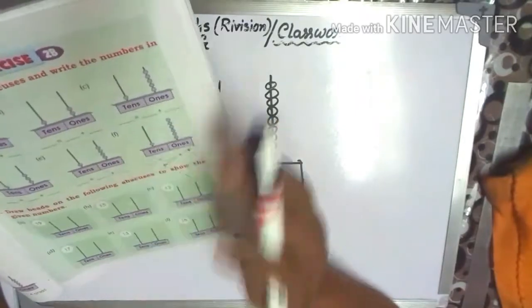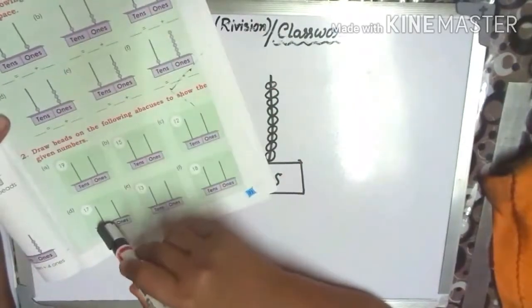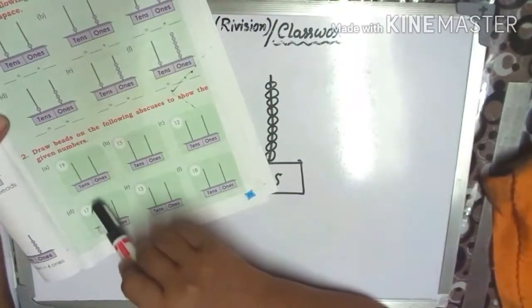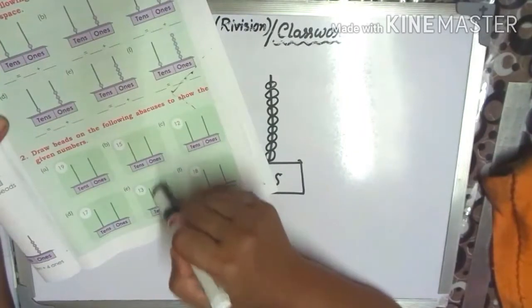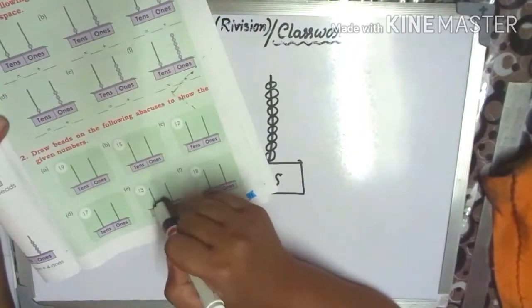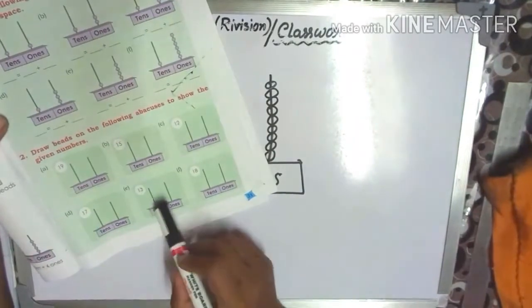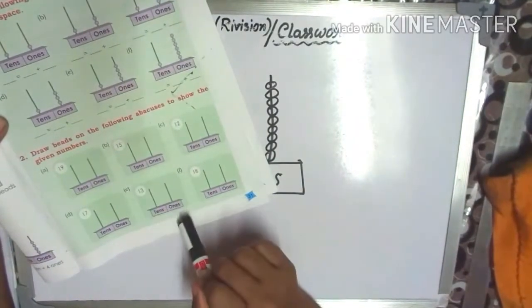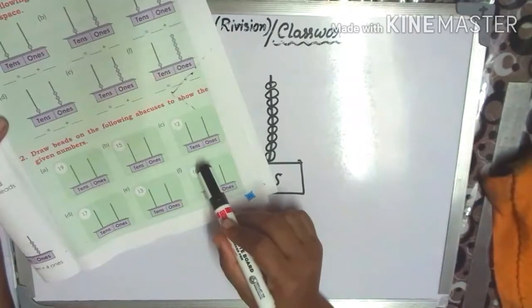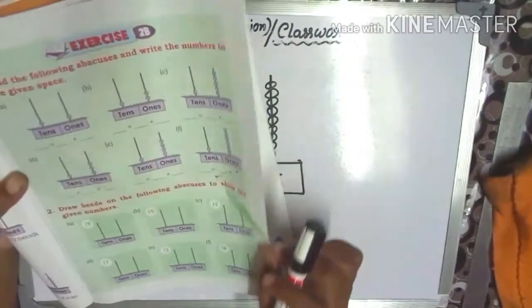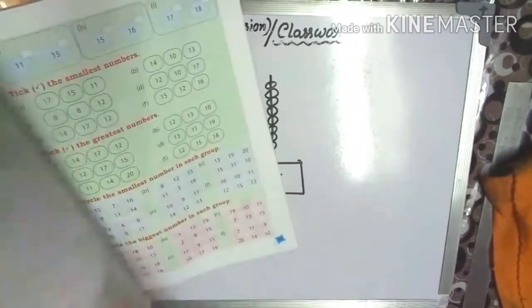17 — 1 ten. Write here in the tens house: 1 ten and 7 ones. Next: 13 — 1 ten. Draw bits and 3 ones. Next: 18. Practice number 2.